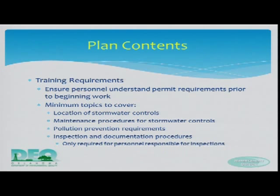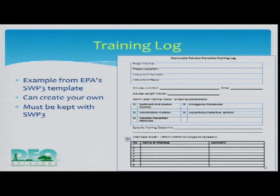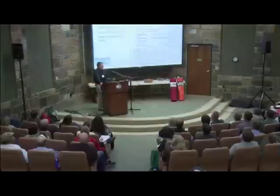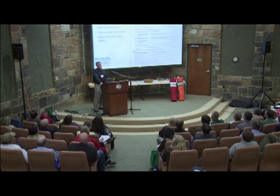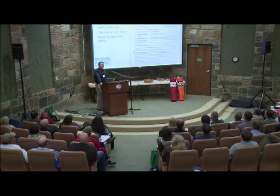You want people who understand what the permit requirements are and what best management practices are supposed to accomplish — the proper installation of those BMPs, when one's filled up to 50% capacity and things like that. They need to have an understanding of this stuff. We've got an example of EPA's SWP3 template, but you can create your own. Keep a training log for when you've done training. This is very easily done at a tailgate meeting or a safety meeting once a week. Talk about keeping things picked up at the site.